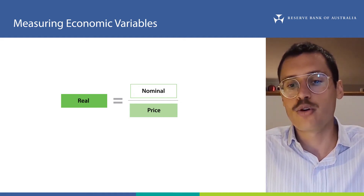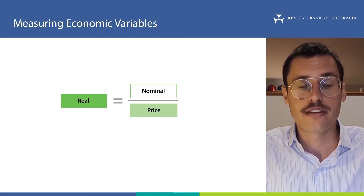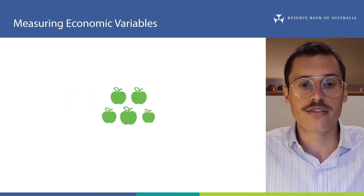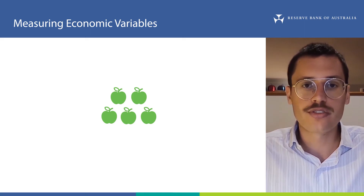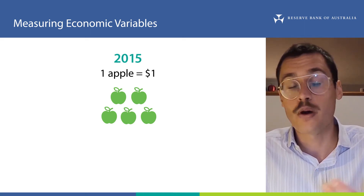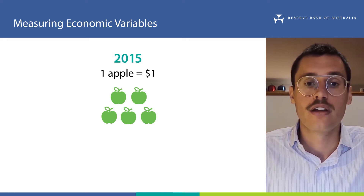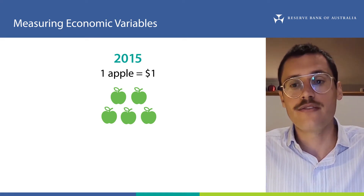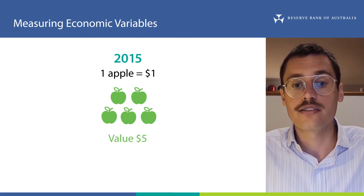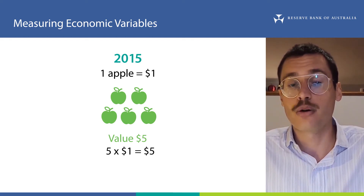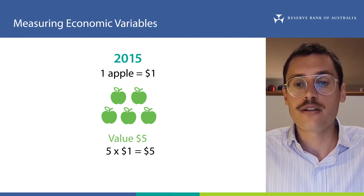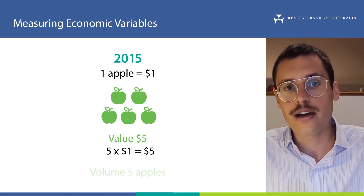Let's understand this more by using a simple example. Imagine that the economy consists of five apples only. Imagine also that it's currently 2015 and that an apple costs $1. So the size of our economy measured in value terms in 2015 is $5 — the volume of apples multiplied by their price. The size of our economy in volume terms is five apples.